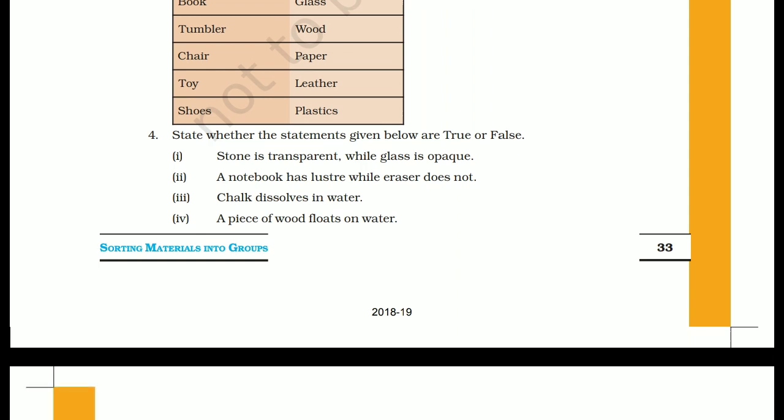State whether the statements given below are true or false. The first statement is: stone is transparent while glass is opaque — this is false. The second statement is: a notebook has lustre while an eraser does not. Eraser has no lustre but a notebook does not either — so the second statement is also false.